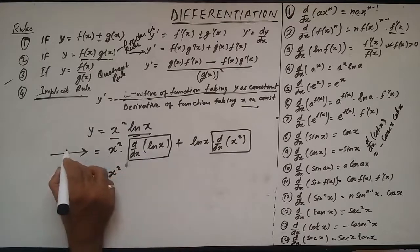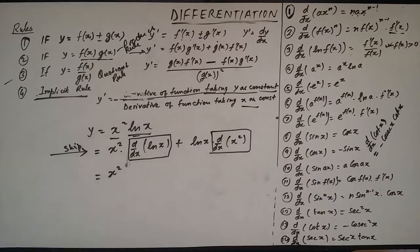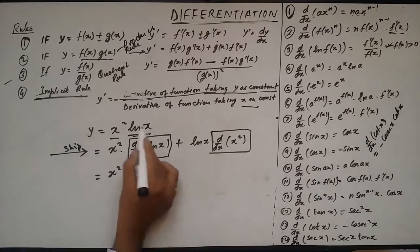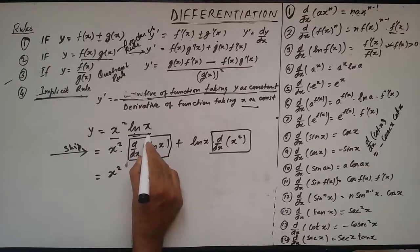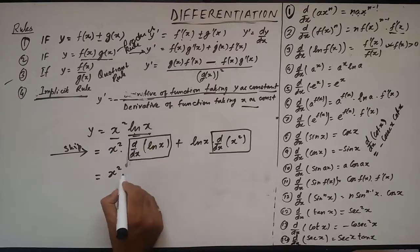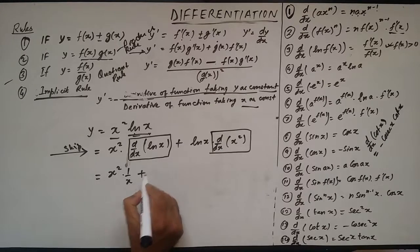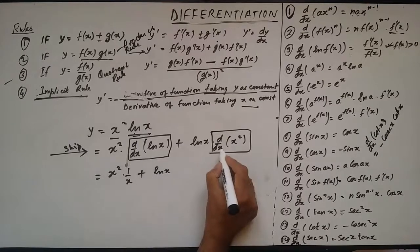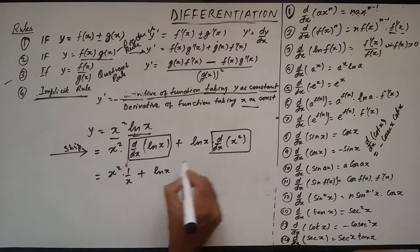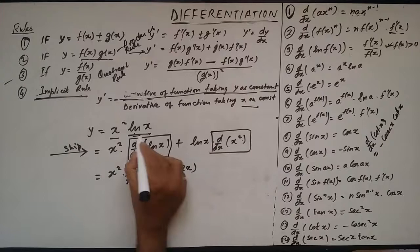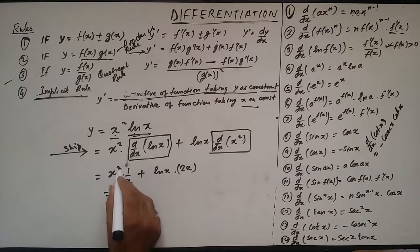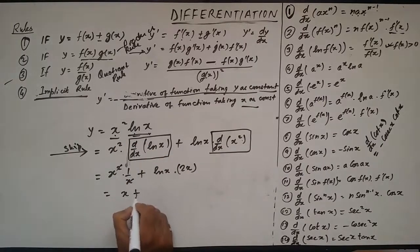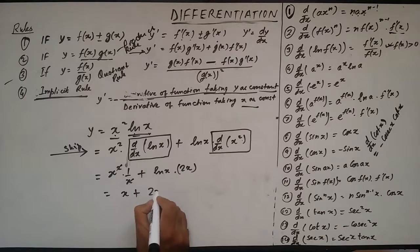You can skip the intermediate step and come straight to: x² into the derivative of ln(x) which is 1/x, plus ln(x) into the derivative of x² which is 2x. So x² and x cancel, and we are left with x + 2x·ln(x).